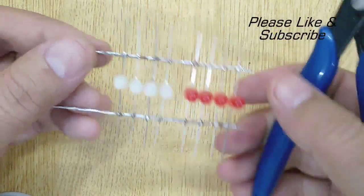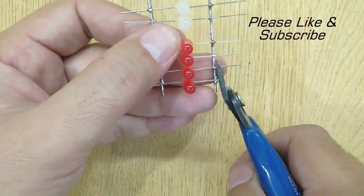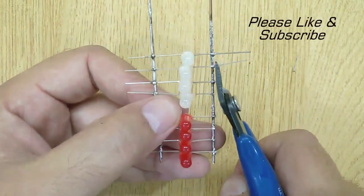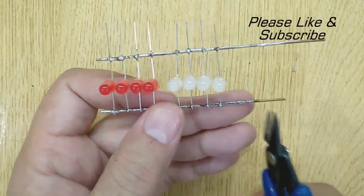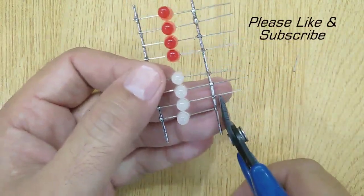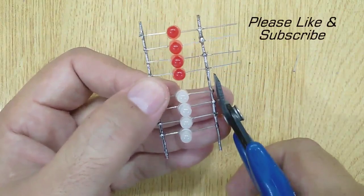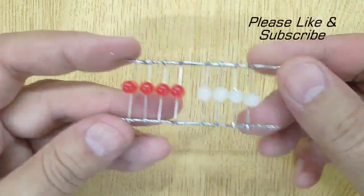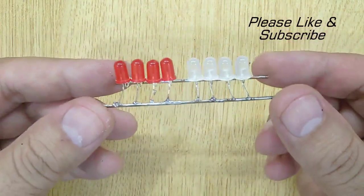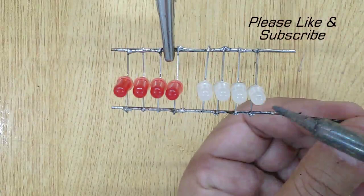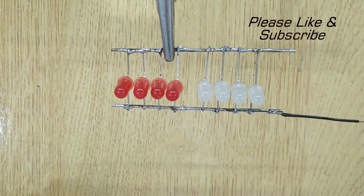Cut all the extra pins and copper wires with a cutter. Solder the two electric wires with the copper wires.